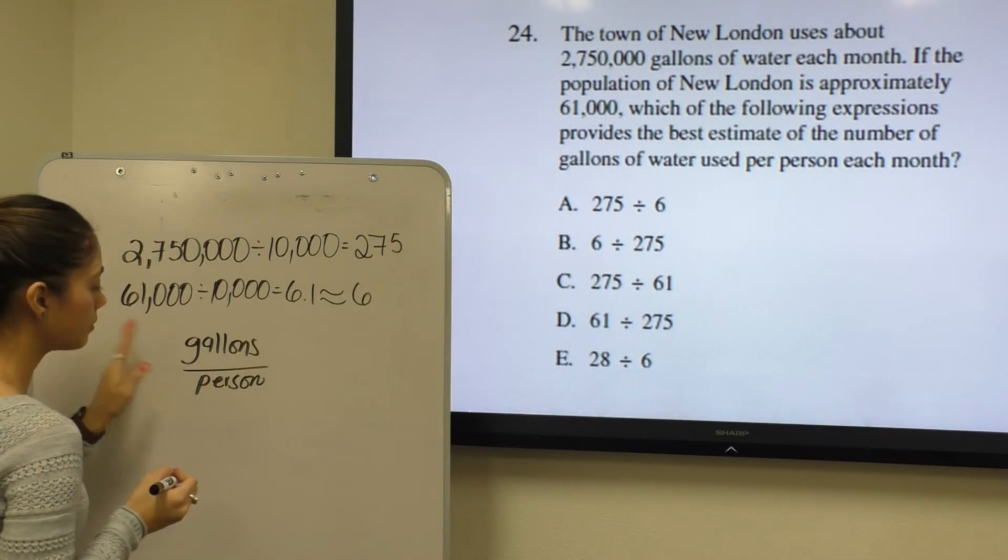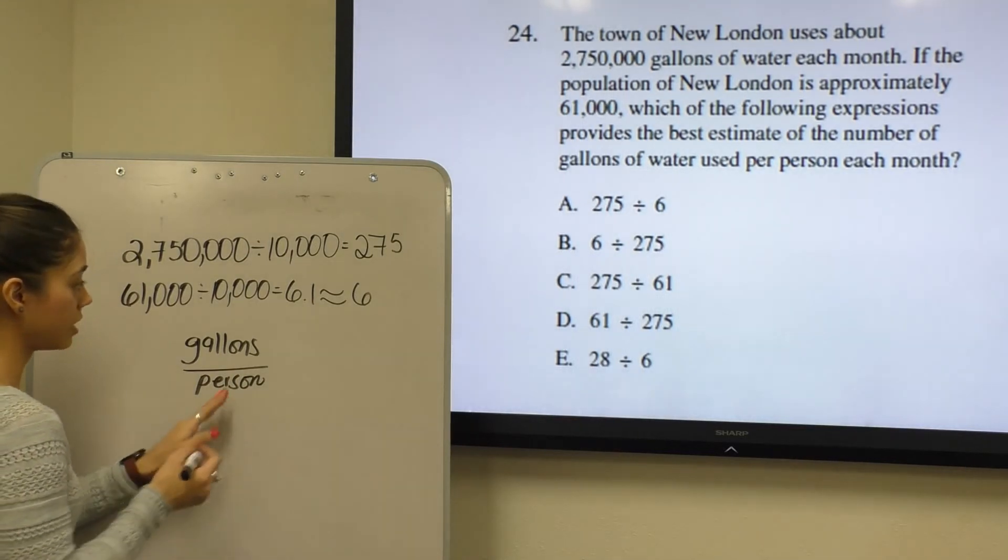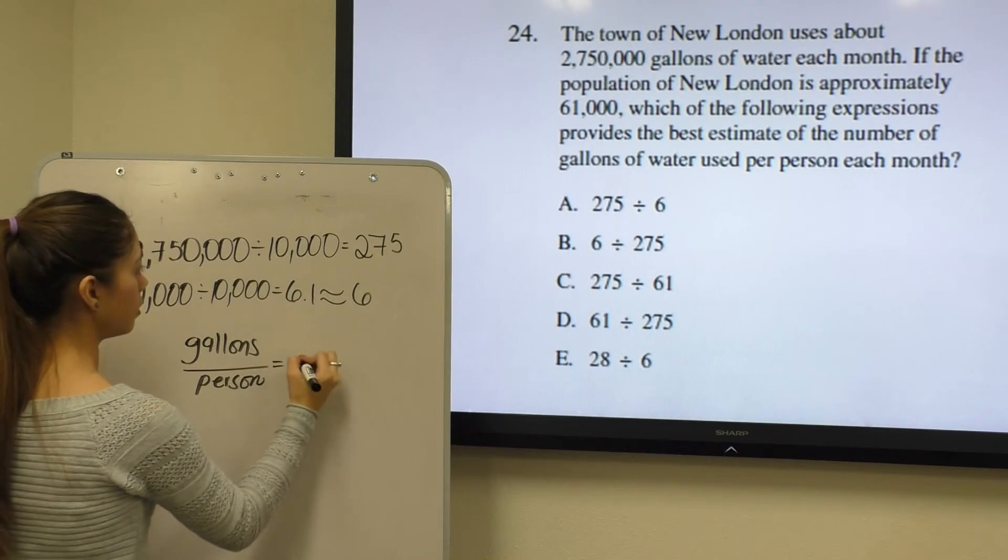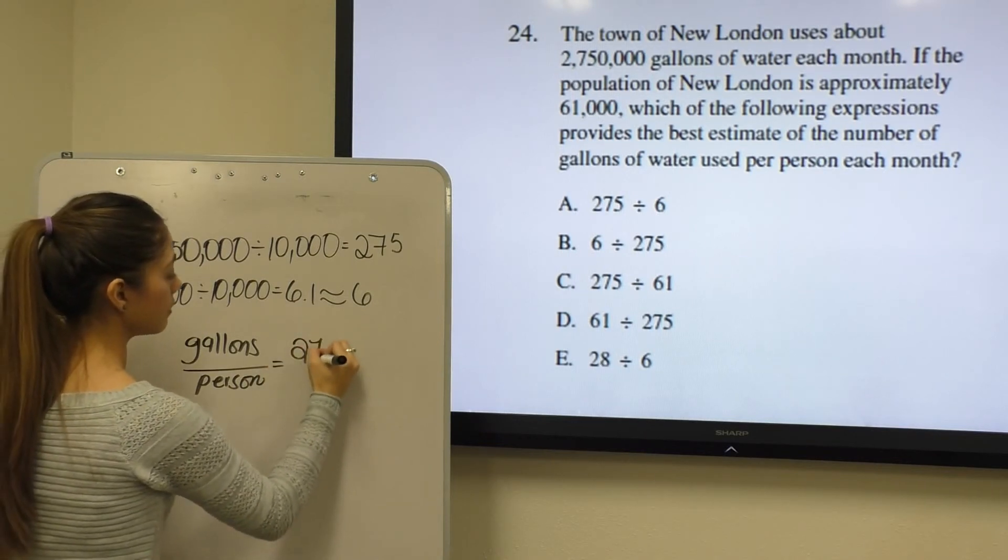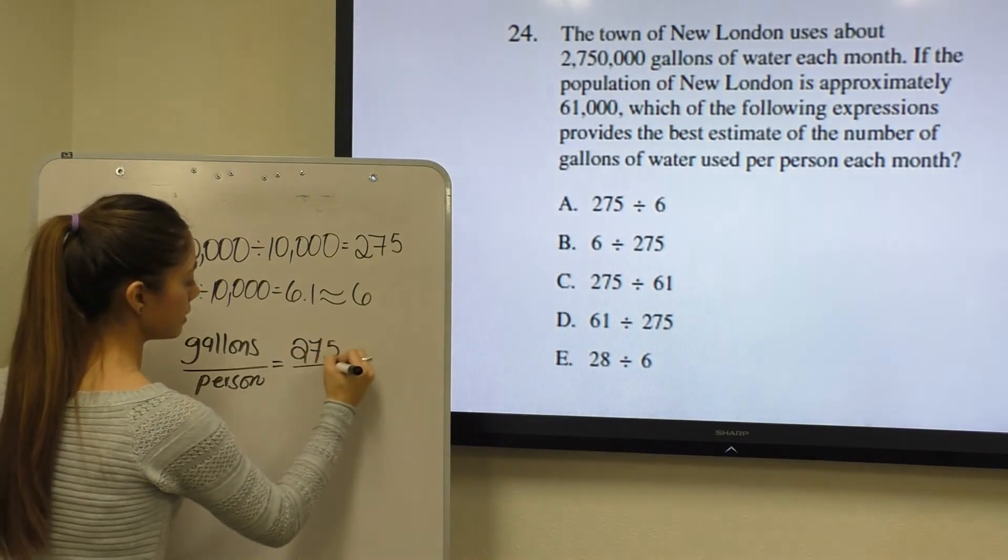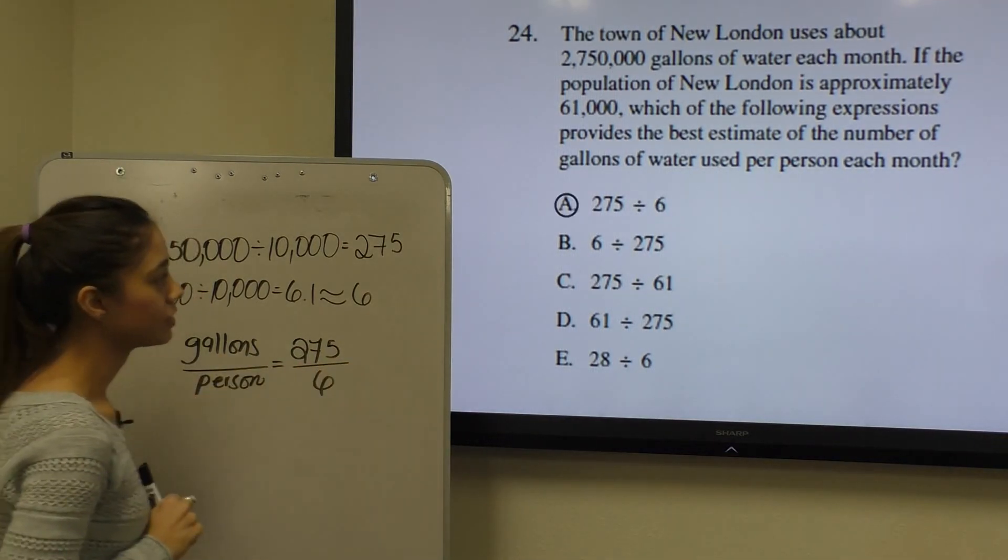So gallons would be on top, person would be on bottom, meaning gallons are being divided by people. So you have 275 gallons divided by 6, which is why our answer is A.